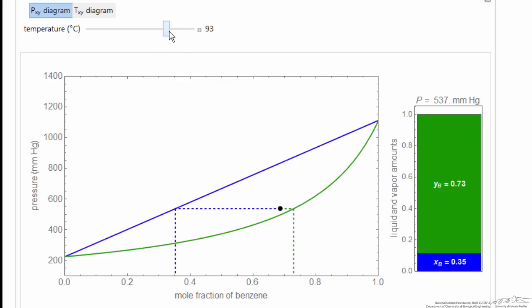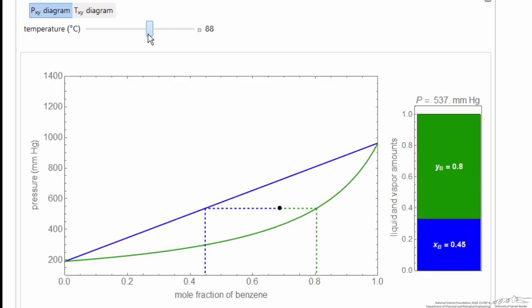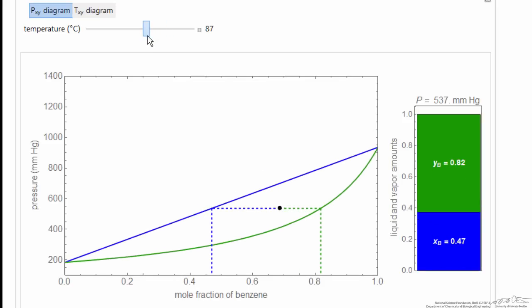I can change the temperature. And what changing the temperature is going to do is move the curves down, because remember the intercepts on the y-axis correspond to the saturation pressure for each component. So the benzene saturation pressure looks like it's about 900 millimeters of mercury at this temperature.